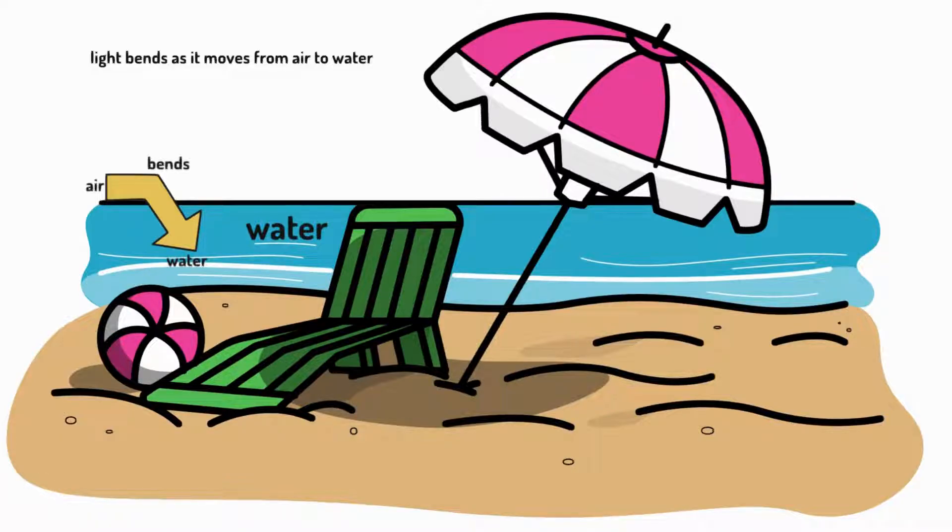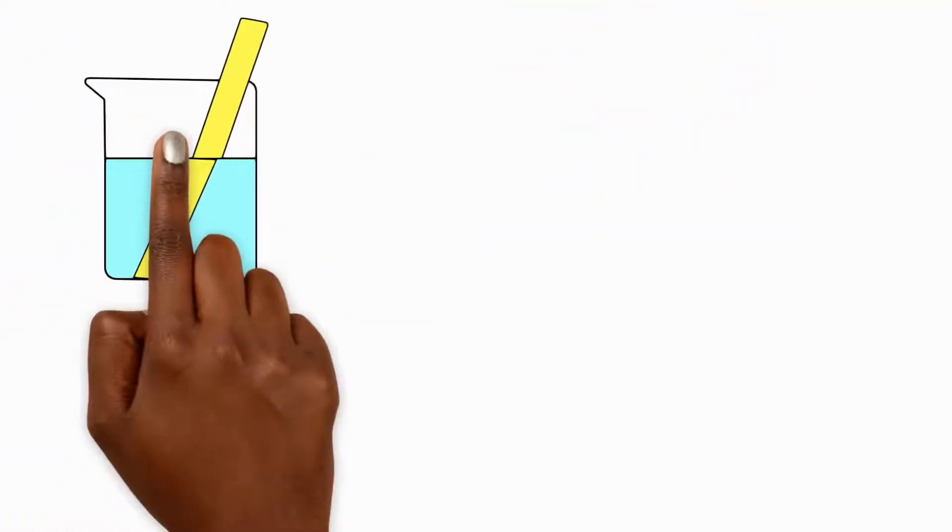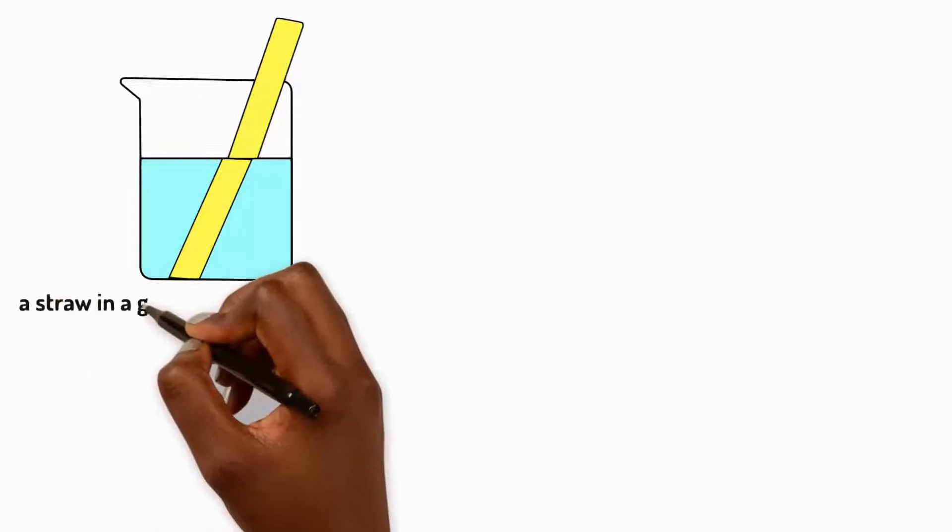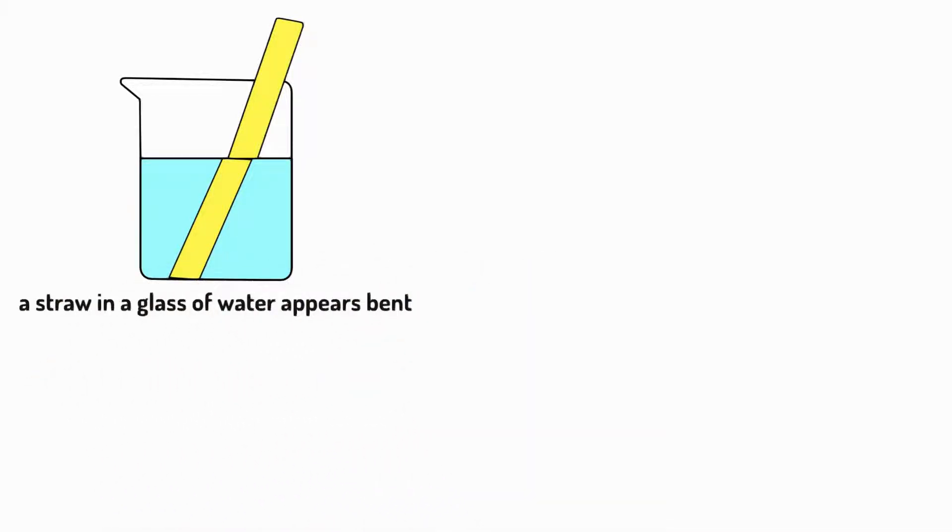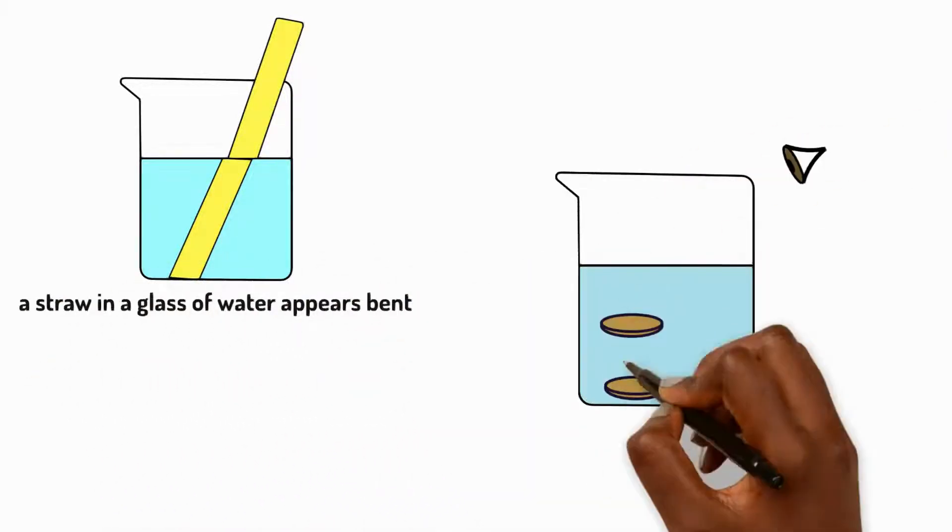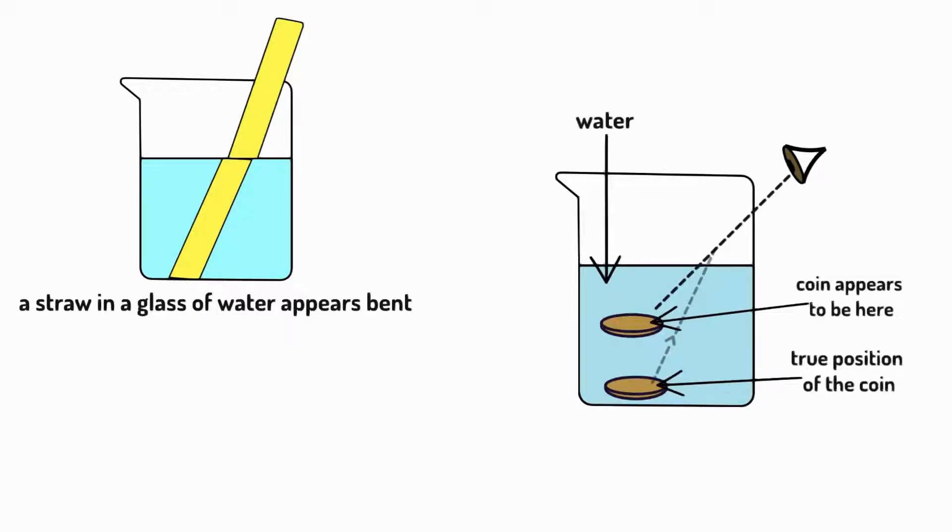This change in direction or bending of light makes things appear differently. For example, a straw in a glass of water appears bent. A coin in a bowl of water looks to have shifted from its actual position.